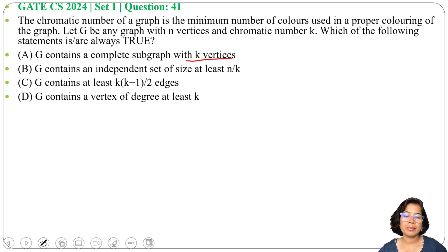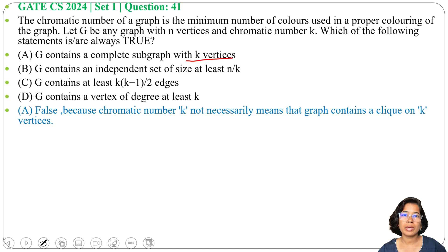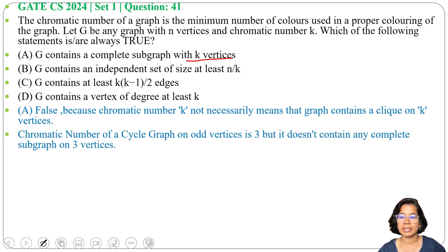Option A is false. If chromatic number is K, it's not guaranteed that G contains a complete subgraph with K vertices. In the case of a cycle with odd vertices, the chromatic number is 3, but there is no complete subgraph of 3 vertices. Hence option A is false.